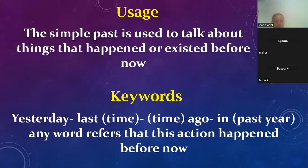In general, any word that tells us this action happened before now — any word that makes clear the event in the sentence happened at some time before now, not right now, before now. Even one minute before.